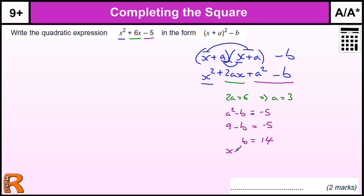So there we have it. x plus 3 all squared minus 14. And when we multiply that out, we get this expression here.